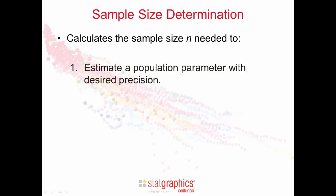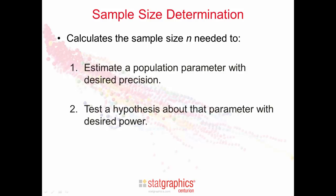The first choice is estimating a population parameter with some desired precision, for example, estimating a mean to within plus and minus 10%. The second is testing hypotheses about that parameter with some specified power.